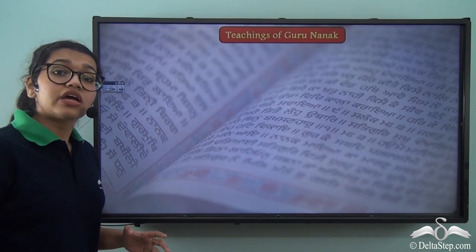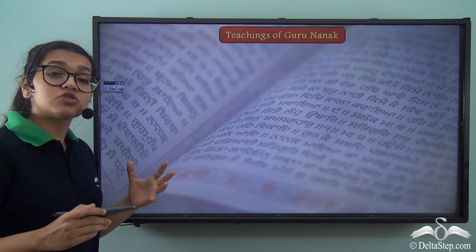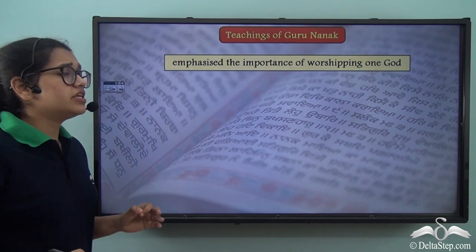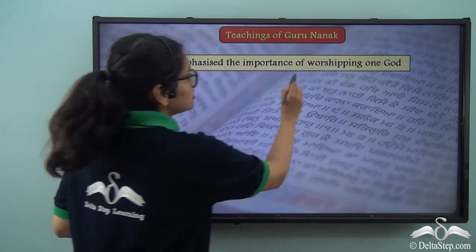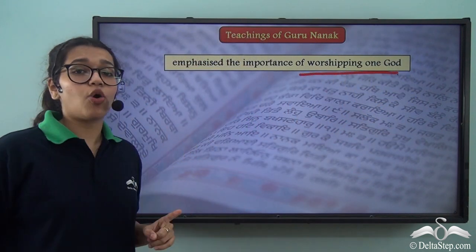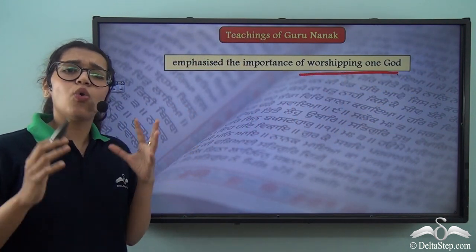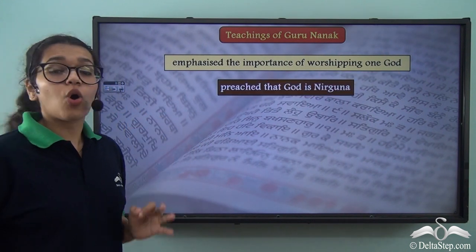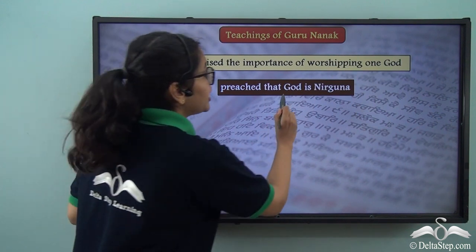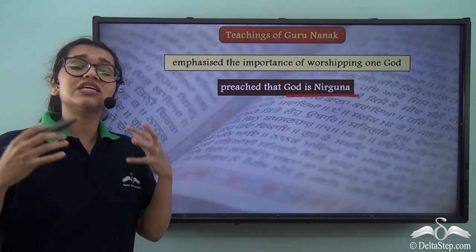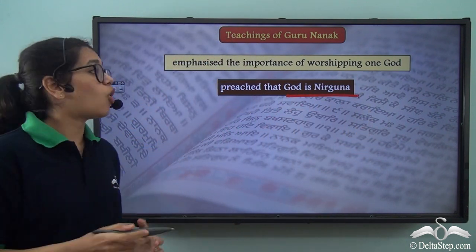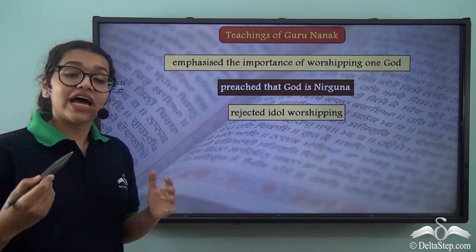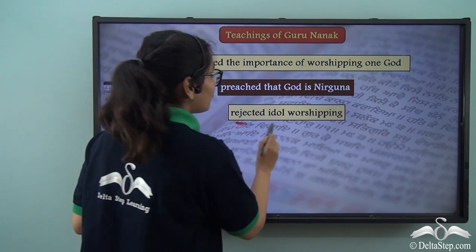Now let us take a look at what is inside this book — the teachings of Guru Nanak. Firstly, he emphasized the importance of worshipping just one God. According to Guru Nanak, there is only one God. This God is Nirguna, or formless, so we cannot exactly visualize this God, and therefore there is no concept of idol worshipping.